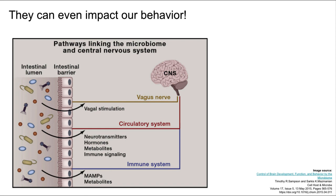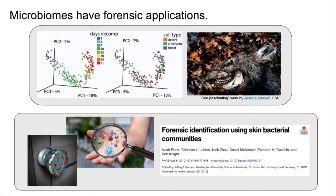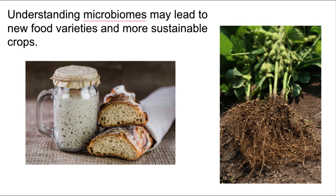In one of the next lectures, I'll talk about a project my lab ran related to that. We also have funding in my lab and Emily Cope's lab at NAU looking at associations between the microbiome and Alzheimer's disease. Moving away from the human microbiome, there are interesting applications in forensics — we'll do a project related to this later in the semester. There's also interesting work on the role of microbes in fermentation, brewing, and sustainable agriculture. Understanding food and soil microbiomes will help lead to new varieties of food and more sustainable crops, and might also help us with waste management.